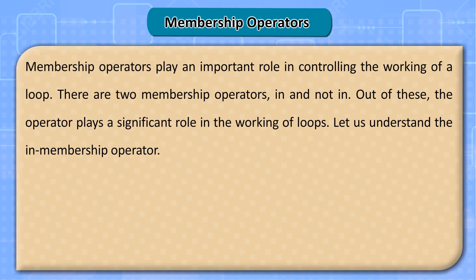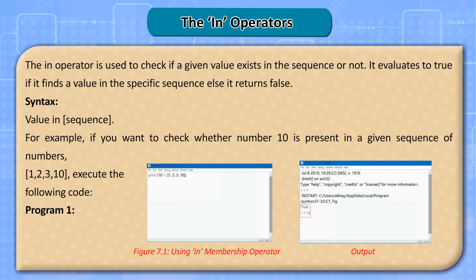Membership operators play an important role in controlling the working of a loop. There are two membership operators: 'in' and 'not in'. The 'in' operator plays a significant role in the working of loops. The 'in' operator is used to check if a given value exists in the sequence or not. It evaluates to true if it finds a value in the specified sequence, else it returns false. Syntax: value in sequence. For example, if you want to check whether number 10 is present in a given sequence of numbers 1, 2, 3, 10.